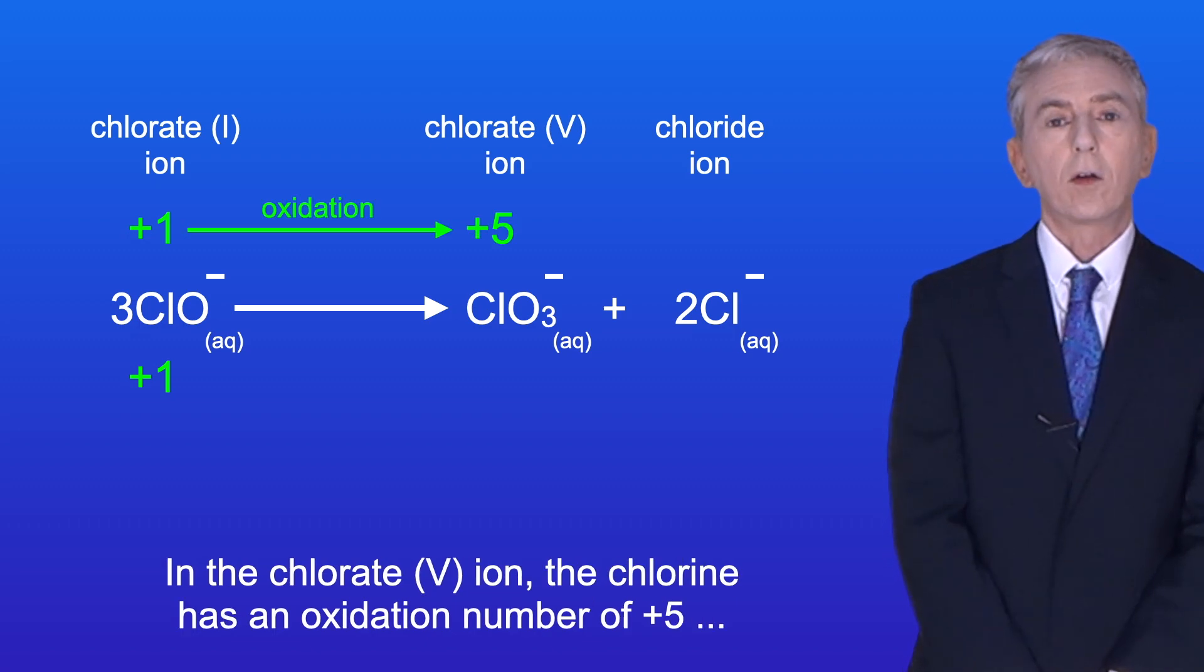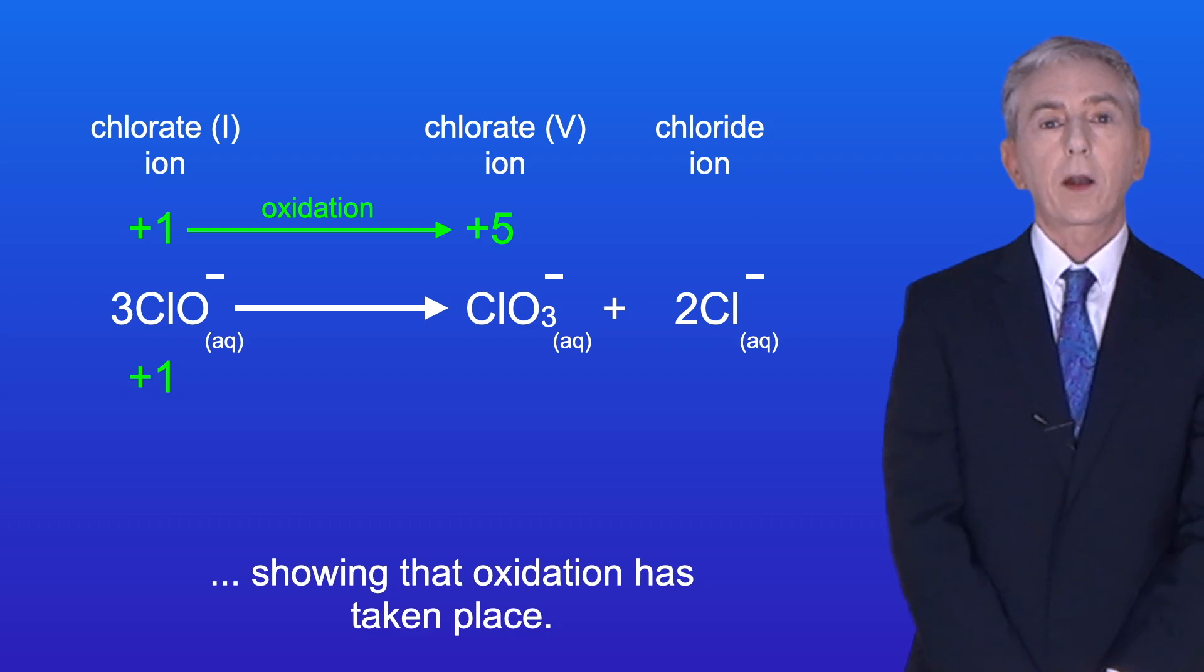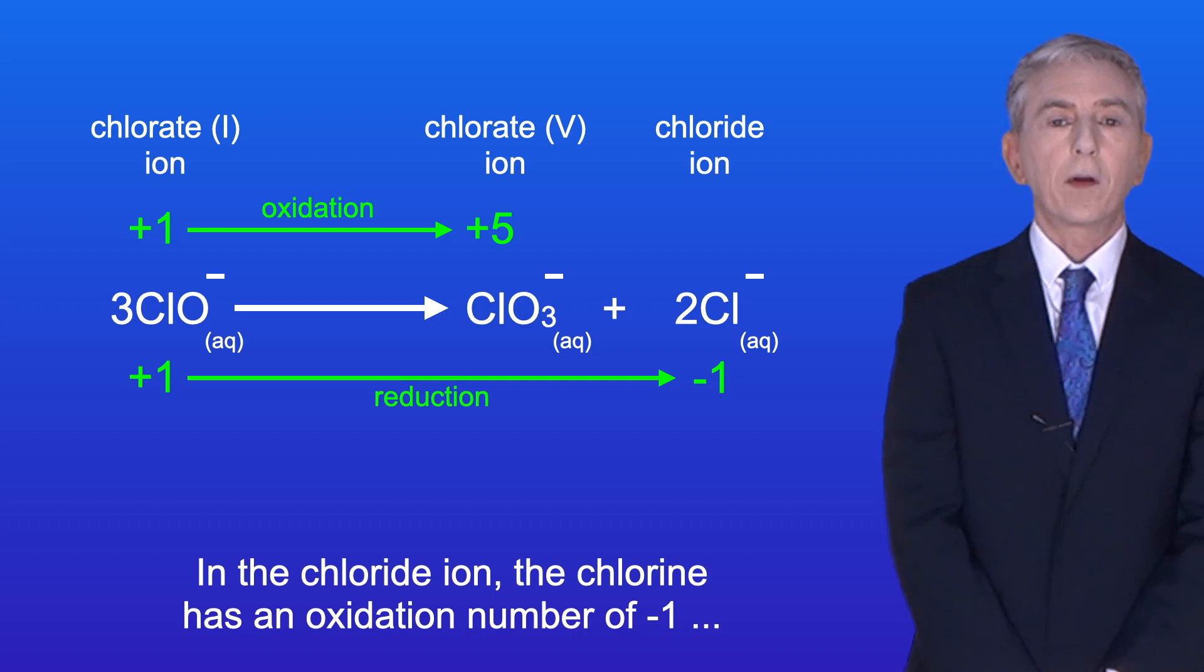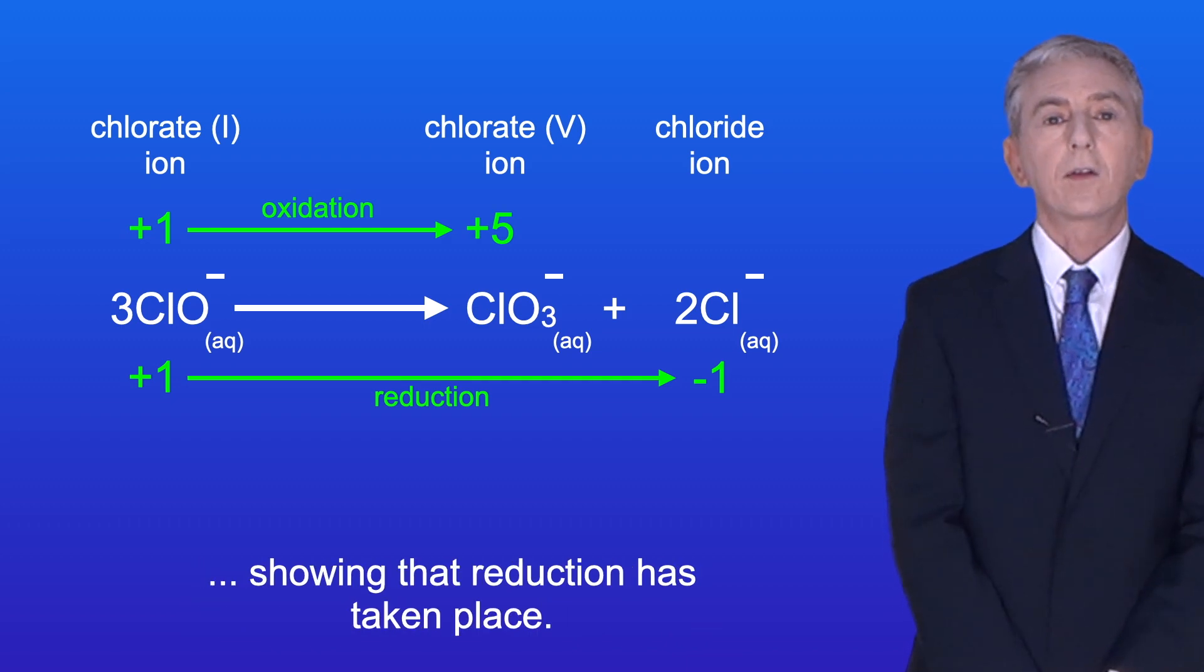In the chlorate five ion the chlorine has an oxidation number of plus five, showing that oxidation has taken place. And in the chloride ion the chlorine has an oxidation number of minus one, showing that reduction has taken place.